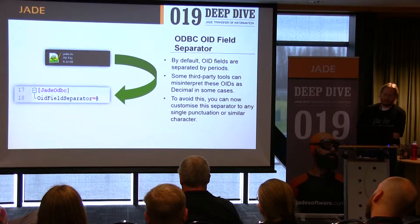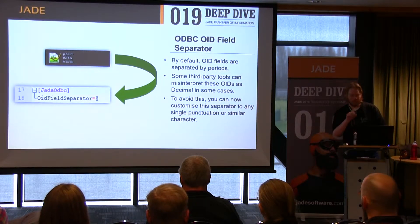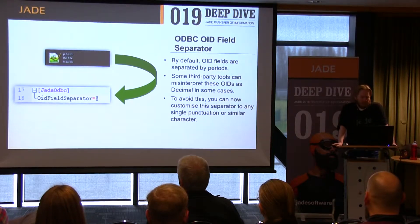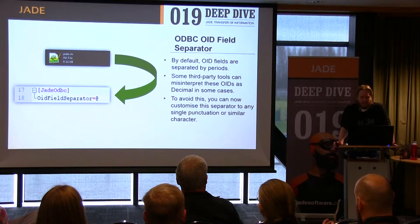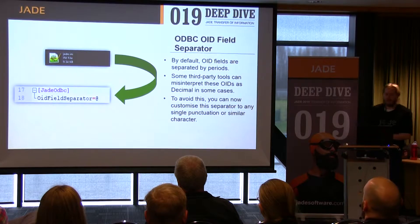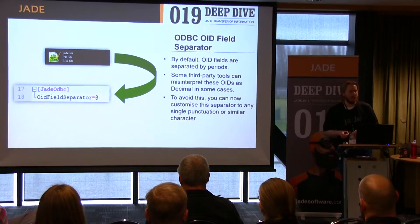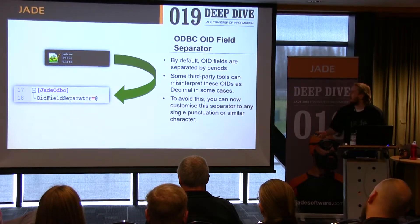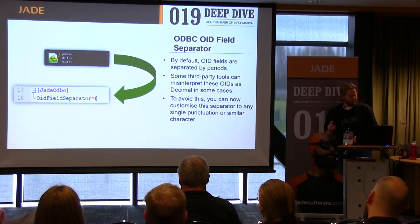The last topic is ODBC OID field separator. By default, OID fields are separated by a period — a dot. There was an issue where some third-party tools were misinterpreting these OIDs as decimals in some cases. To work around this, there's a new ini file setting under Jade ODBC. You can set OID field separator to basically any punctuation character, and it will replace the dots in the OID with that punctuation — for instance, an at sign — just to help those third-party tools out.